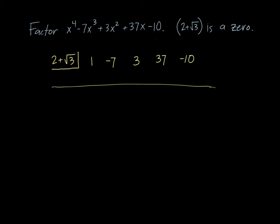We're going to start by dropping this 1 straight down. Then we multiply by 2 plus the square root of 3. Now we add, just like we always do in synthetic. When you add negative 7 to 2 plus the square root of 3, you get negative 5 plus the square root of 3. We're adding like terms, so the negative 7 pairs up with the 2 to get negative 5 and the square root of 3 just tags along.